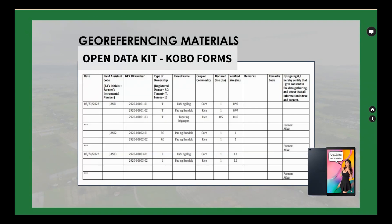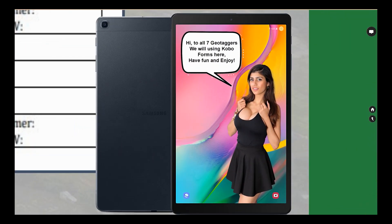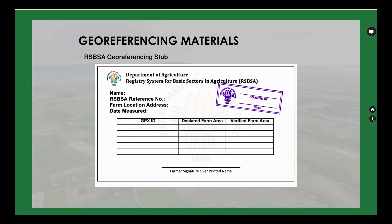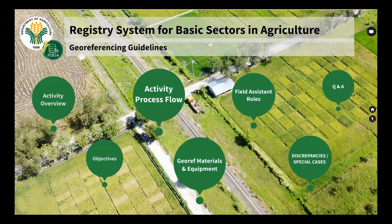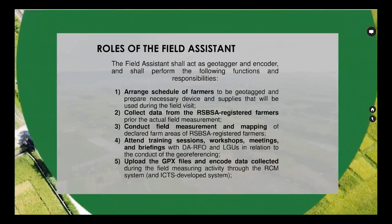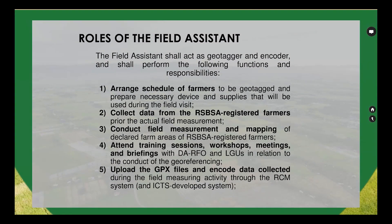The geo-referencing materials include the farmer's master list, the geo-referencer's logbook or FAA's logbook — where we are using tablets for the KoBoCollect application — and the RSBSA geo-referencing stub that will be given to farmers as proof of successful field measurement. Those are the materials and equipment.